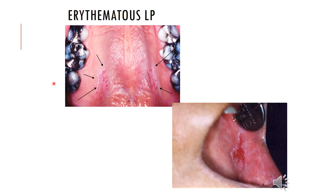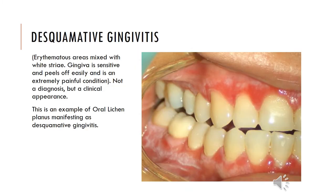Examples of erythematous lichen planus show white areas with central redness — similarly, central redness with surrounding white areas. This is the appearance of erythematous lichen planus. Desquamative gingivitis is an interesting terminology — it is not a diagnosis but a clinical feature where erythematous areas are mixed with white striae, generally seen on the gingiva. The gingiva is sensitive and feels sore easily, and it is extremely painful. The patient presents saying they cannot brush their teeth without significant pain and that their gums appear to be peeling off.